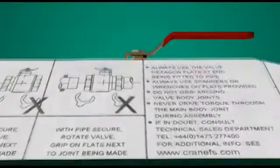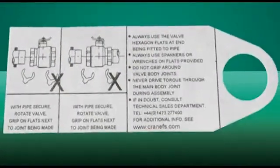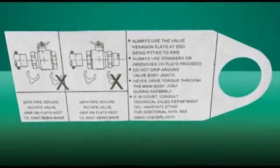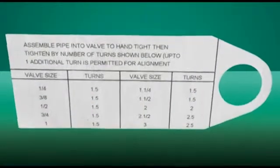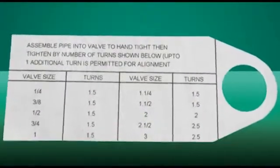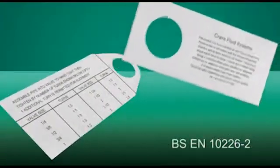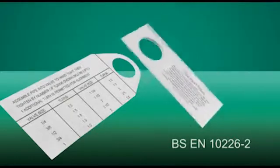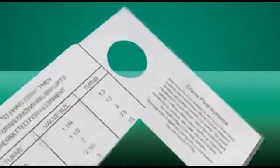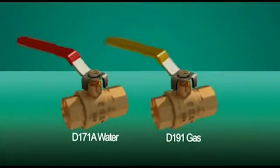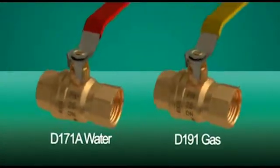Last but not least, to aid installation, the new installation tag is a valuable addition to the valve. Outlining best practice, the tag specifies the number of wrench turns needed, according to size, as specified in BSEN10226-2 for taper threads or compression pipe installation.